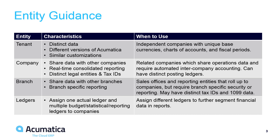Related companies are independent legal entities which share common operating data as well as the same base currency, financial closing period, and have a similar chart of accounts. These entities should be set up as companies. The system automatically creates balancing entries for intercompany transactions when two or more companies, or their related branches, are involved in the same transaction.